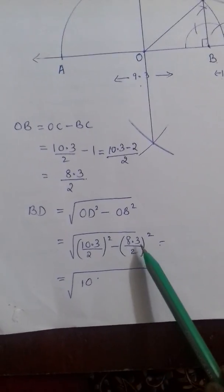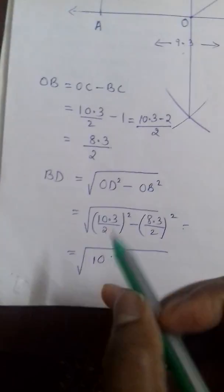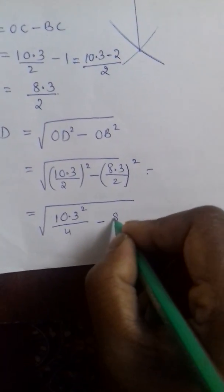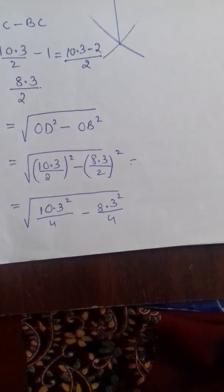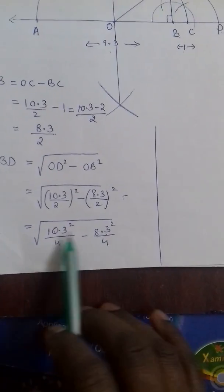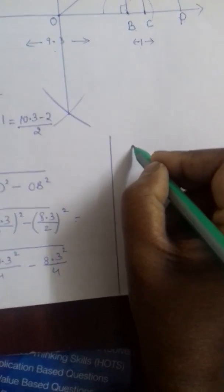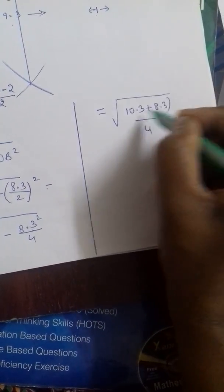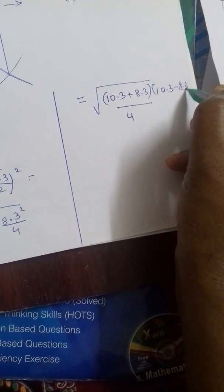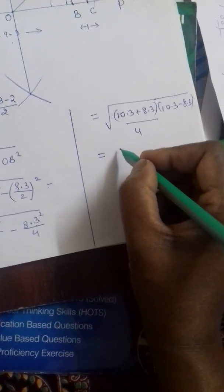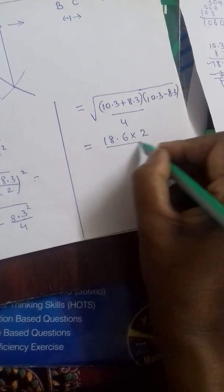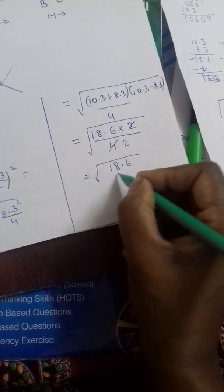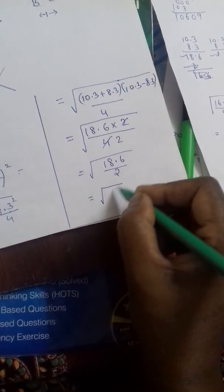That is 10.3 by 2 square minus 8.3 by 2 square. This can be done by 10.3 square by 4 minus 8.3 square by 4. Since denominators are same, numerators are of the form A square minus B square. So we can apply that formula here. Square root of denominator is 4. 10.3 plus 8.3 into 10.3 minus 8.3. So you will get 18.6 into 2 divided by 4 which is under square root. So on cancelling here, you will get square root of 18.6 divided by 2. On dividing these two, you will get square root of 9.3.